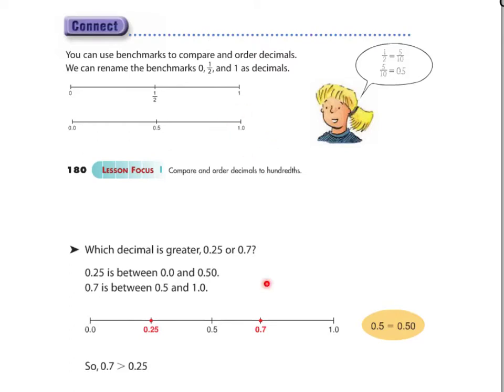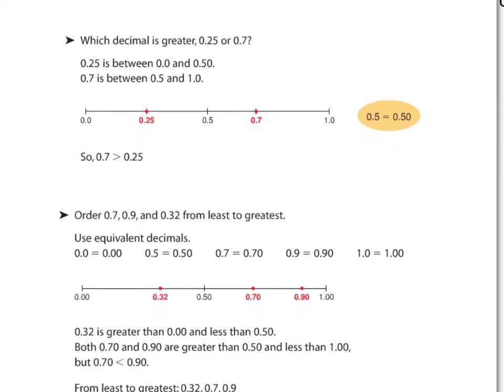So if we were comparing these two numbers, which decimal is greater, 0.25 or 0.7? Well, 0.25 is between 0 and half, whereas 0.7 is between half and 1. Therefore, we know that 0.7, or 7 tenths, is larger.